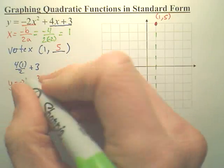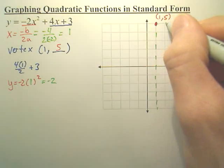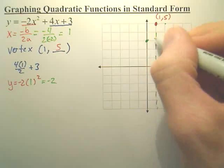If I want one step over, you plug in 1. So if I plug in 1, this gives me negative 2. So if I go one step over, that means I'm going down 2.